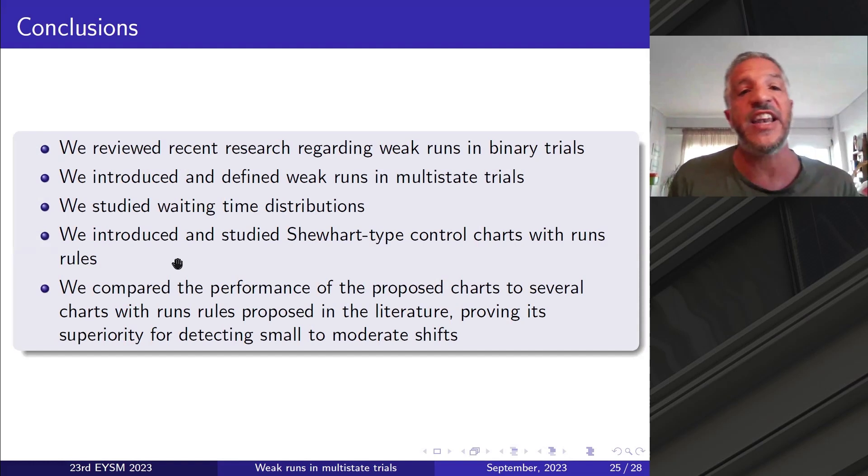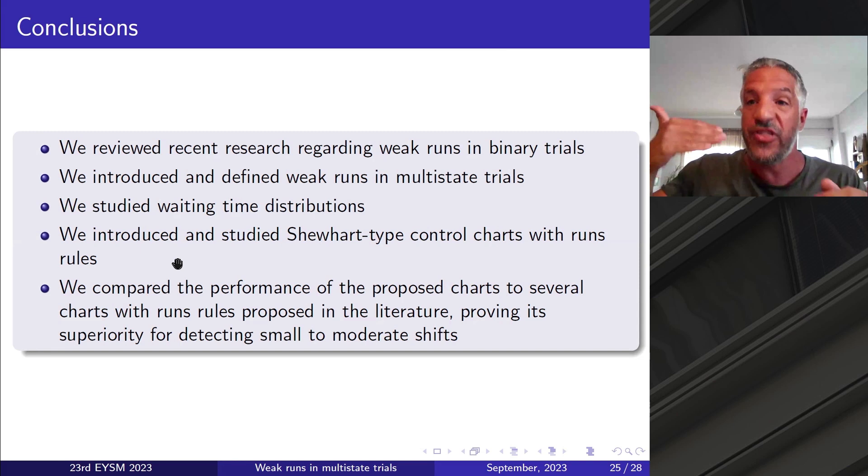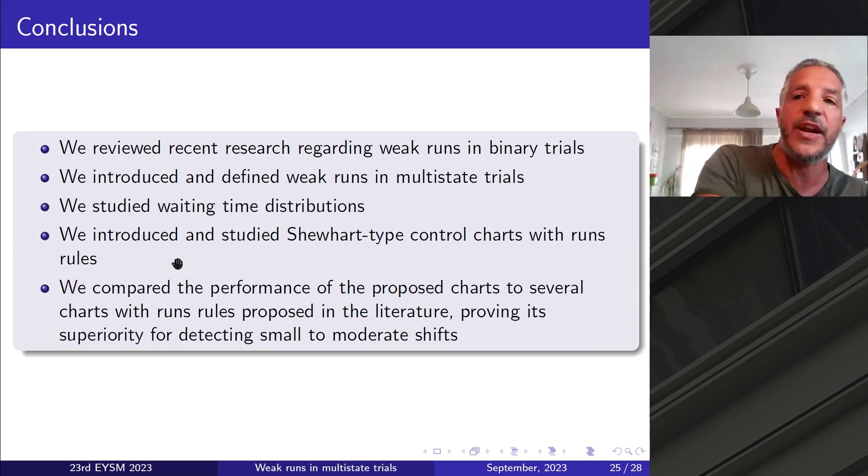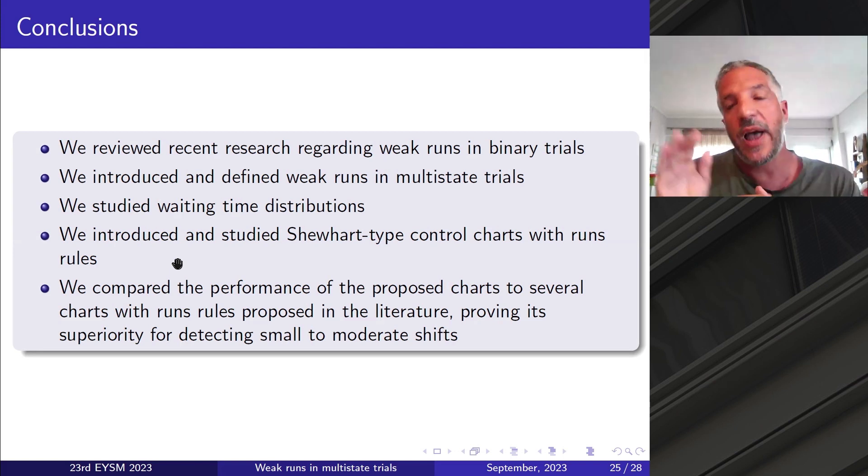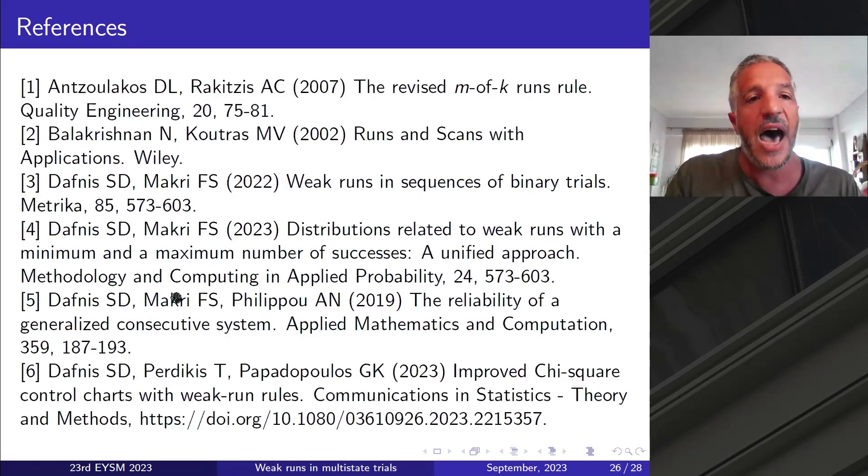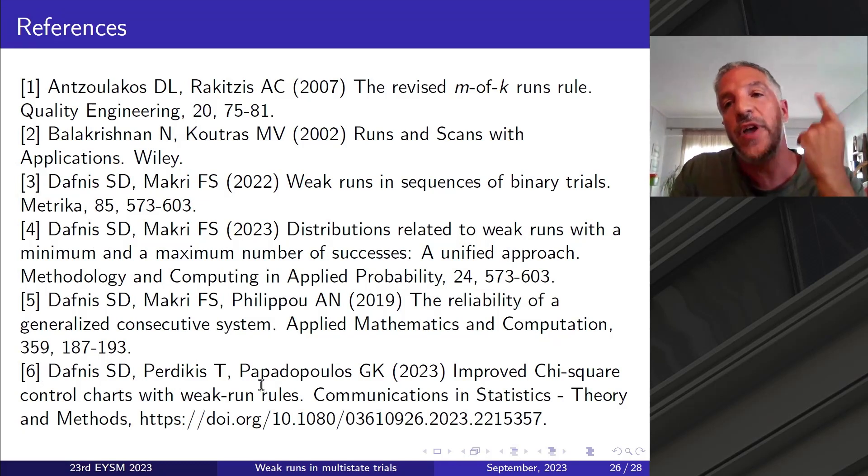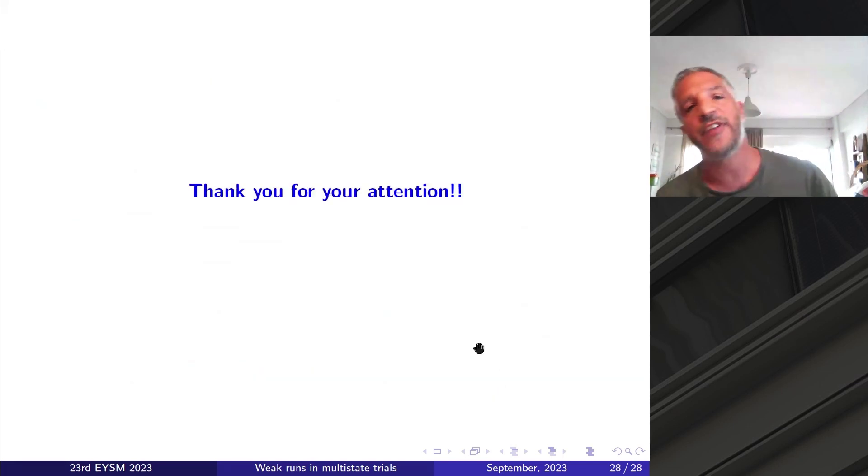So we reviewed recent research regarding weak runs in binary trials. We introduced and defined weak runs in multi-state trials. We studied waiting time distributions. We introduced and studied two charting control charts with run rules. And we compared the performance to several charts in the literature and proved its superiority for detecting small to moderate shifts. For future research, we have two directions: first, enrich the theoretical tools, the weak runs tools, and apply them to different applications. And also, as it comes to statistical monitoring, add warning limits and do non-parametric charts as well. These are the basic references. These three here is the one that we've introduced, weak runs in binary trials. And also six, which is the first work of weak runs in binary trials in statistical process monitoring. Some more references. And thank you for your attention.